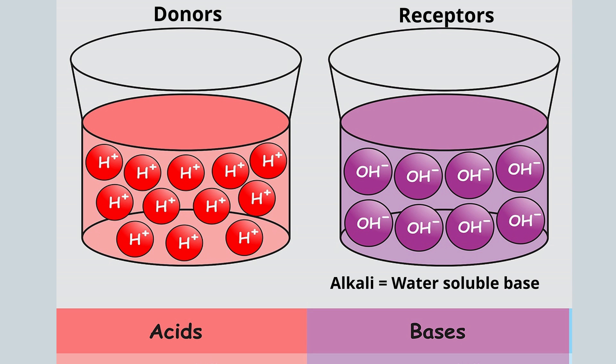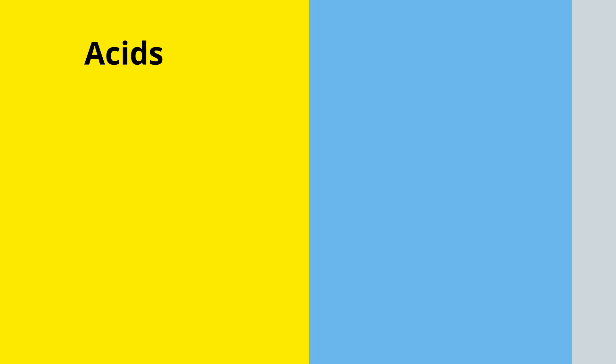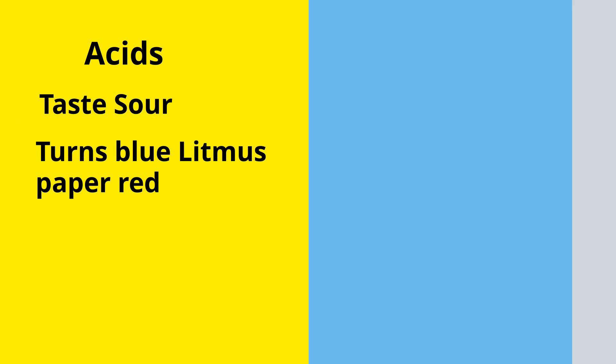Let's look at a couple of characteristics of acids. Acids taste sour. Acids turn blue litmus paper red. Acidic solutions have a pH less than 7.